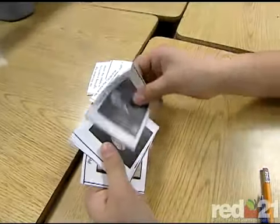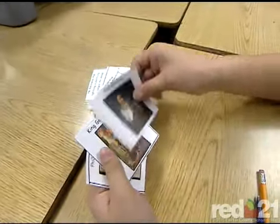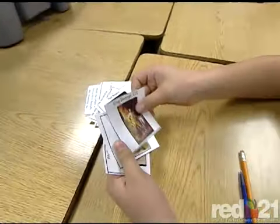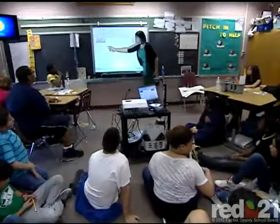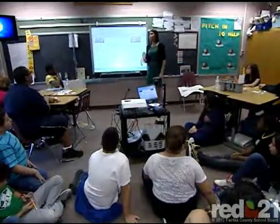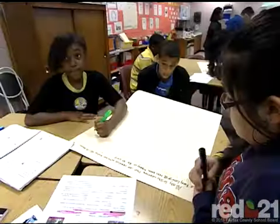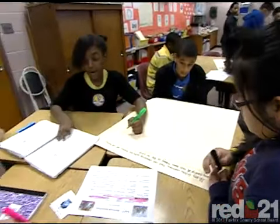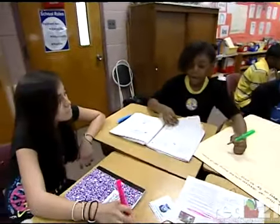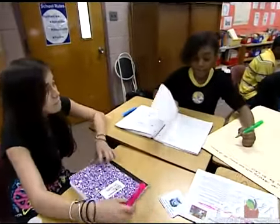He discovered that lightning is electricity and he helped the United States. Who was that person? Strategies for Critical and Creative Thinking is about teaching up to extend the learning process for every learner in every content area.